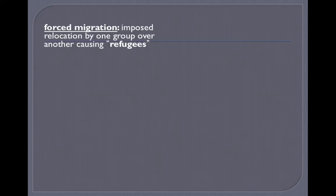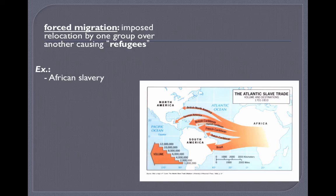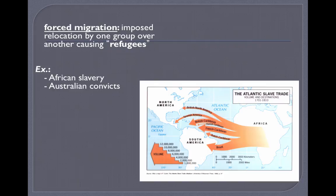On the other end of the spectrum is forced migration — imposed relocation by one group over another, which creates refugees. The transatlantic slave trade is one example: Africans taken against their will and shipped to British North America, Spanish Americas, the British, Danish, French, and Dutch Caribbean, and Brazil. We are talking millions and millions of people forcefully migrated from Africa between 1701 and 1810, shown here by graduated symbol arrows where bigger means greater magnitude.